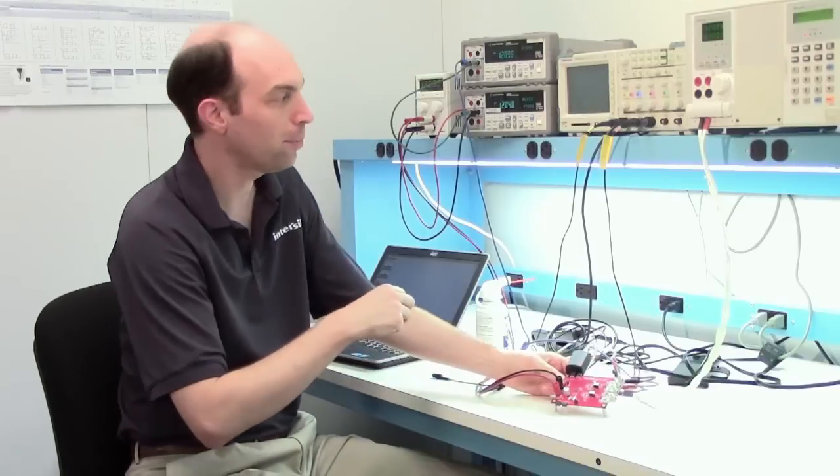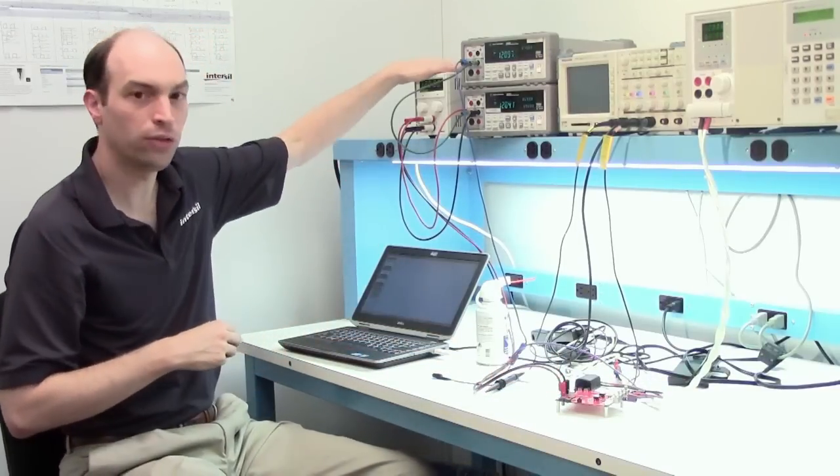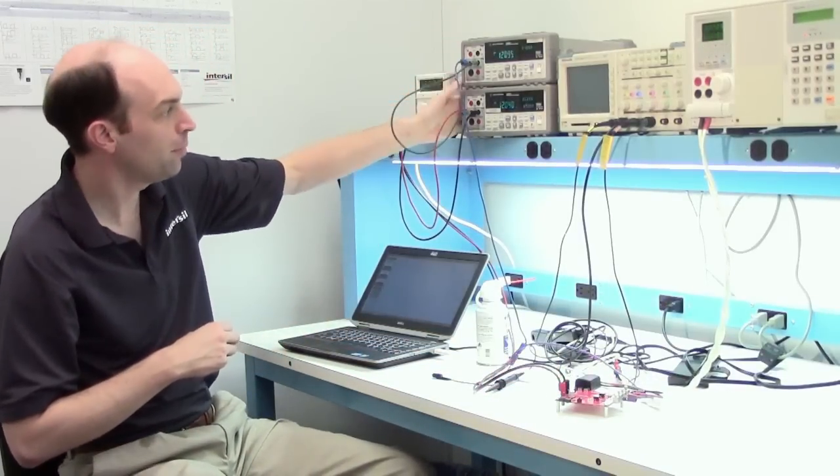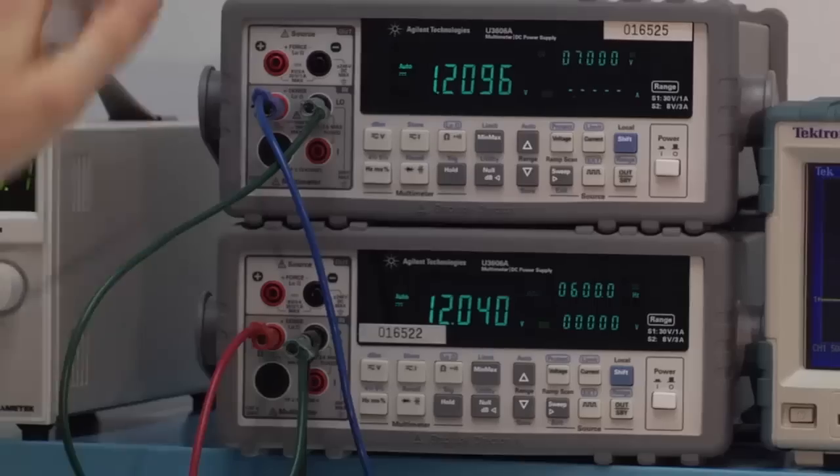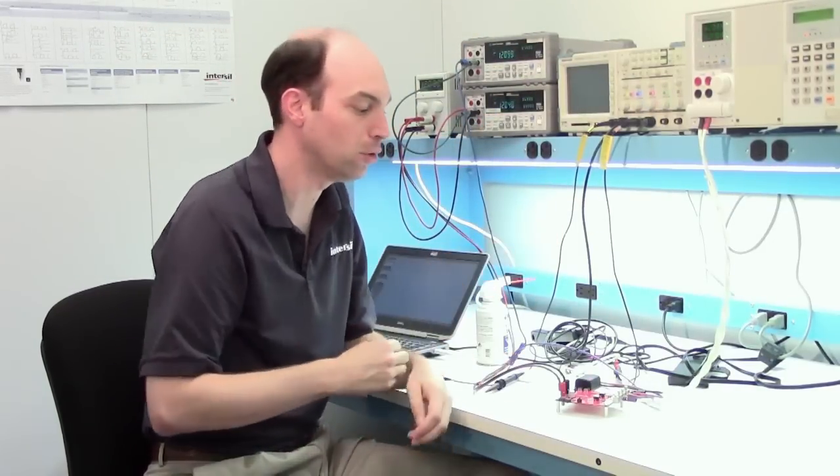Now in this setup, I'm running from a 12 volt VIN source. You can see the multimeter is running right now at 12 volts in. I've got a 1.2 volt output and I've got connected to a load box, so we can start manipulating different conditions such as input voltage and the output load.